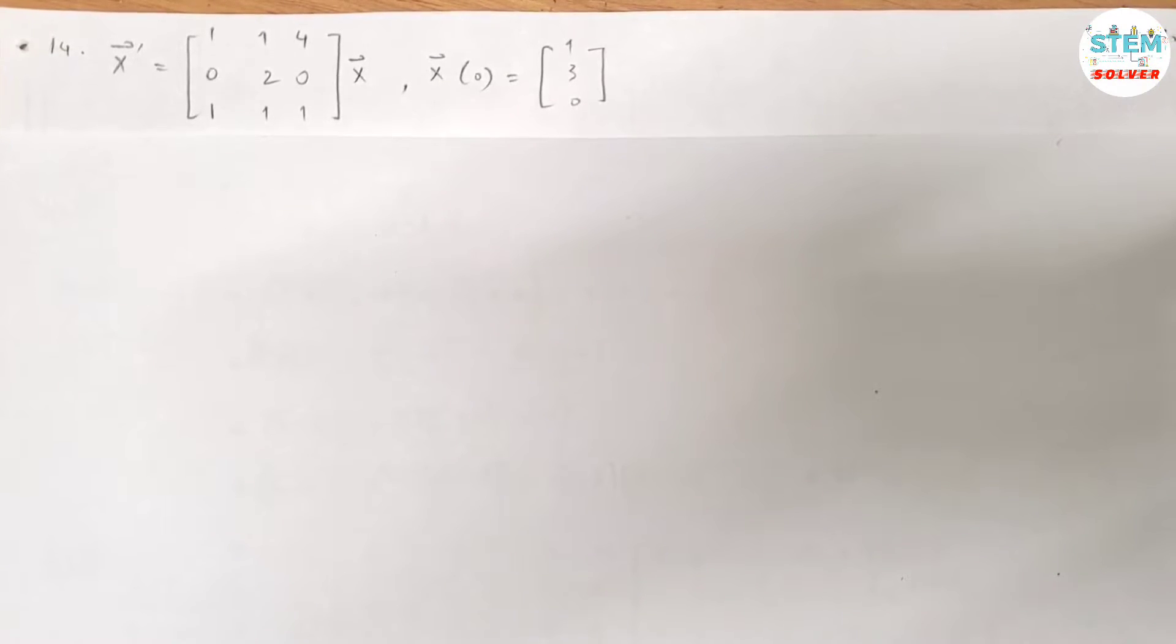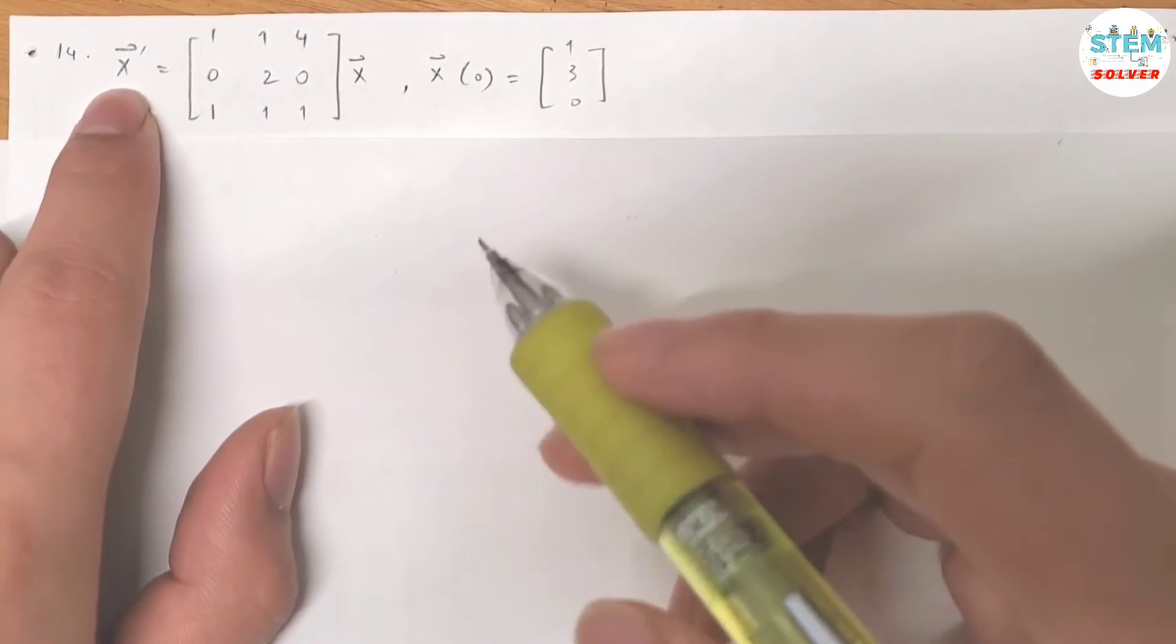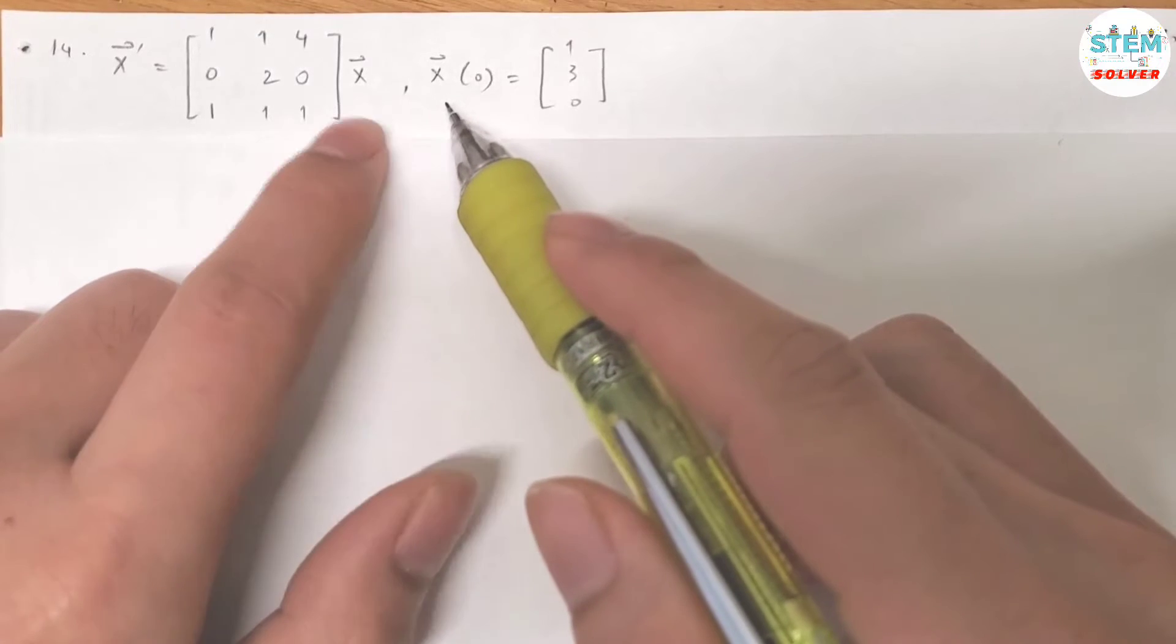Solve the given initial value problem. You're given a system in terms of vector x-prime and an initial condition.